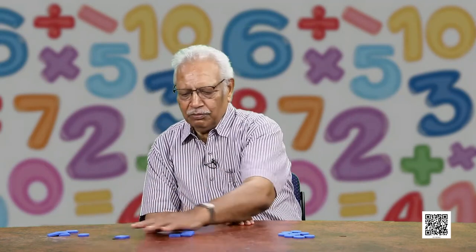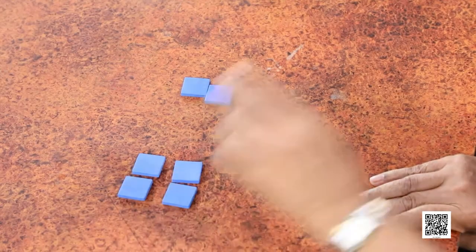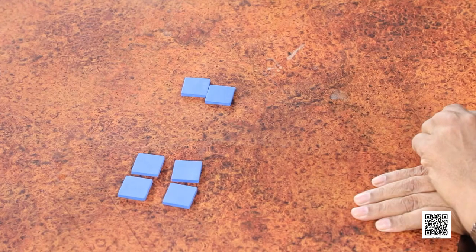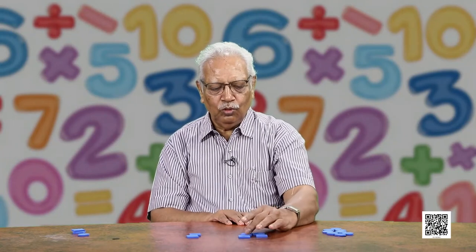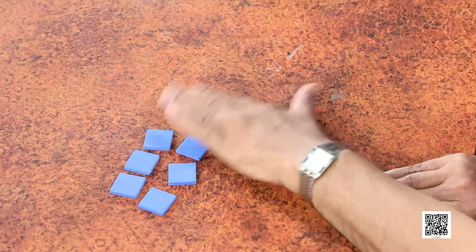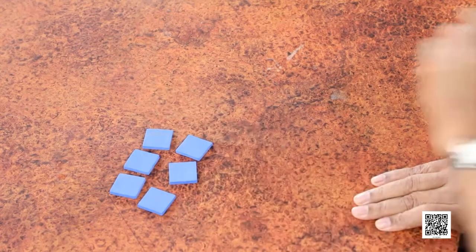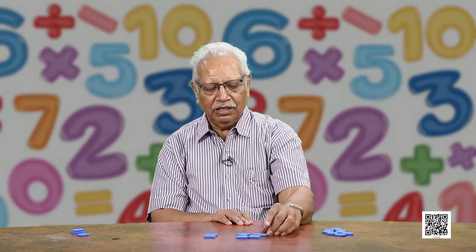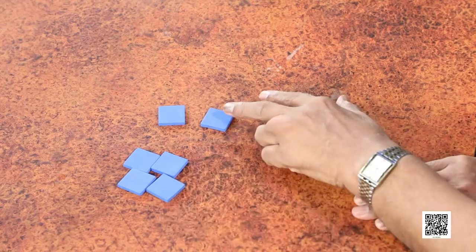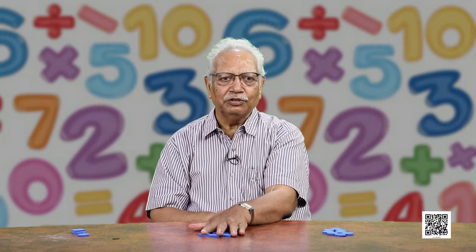Let us take more shapes and things to add. How many are these? 4 — 1, 2, 3, 4. And we add 2 to them, then how many do they become? We can count all together: 1, 2, 3, 4, 5, 6. Or we can count further from 4 to 5, 6. We know these are 4, so we count further from 5 to 6. That way we can add many things — numbers up to 9.